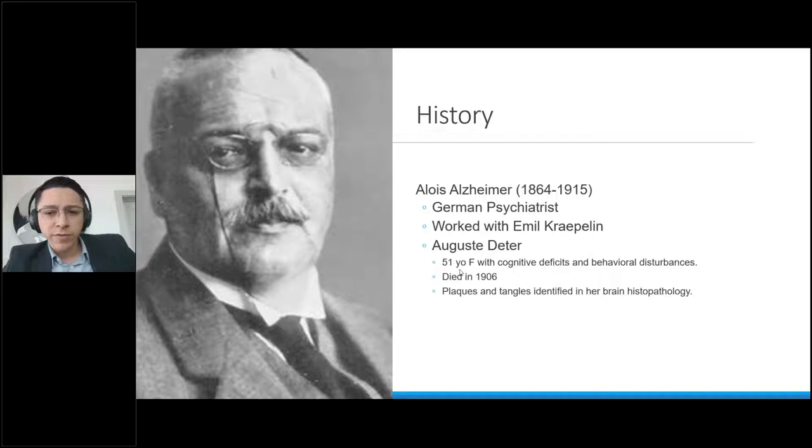For those of you guys who are not familiar with this name, if you're interested in psychiatry or read about psychiatry's history, this will definitely come into play. Kraepelin is hailed as the father of modern scientific psychiatry, and they got to work together during the 1900s. Well, Dr. Alzheimer worked with a patient by the name of Auguste Deter. She was a 51-year-old female who started exhibiting cognitive deficits, as well as some behavioral disturbances. And when she died, he had an opportunity to do some brain histopathology, and he identified the plaques and tangles that are characteristic of Alzheimer's disease.